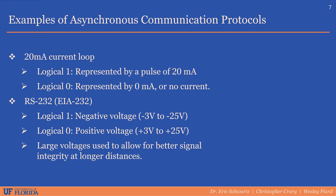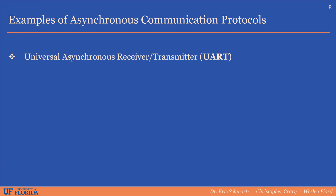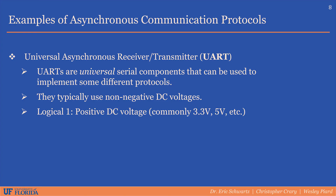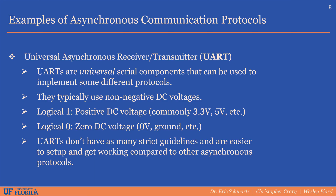RS-232 is an extremely well-known asynchronous protocol where large non-zero voltage levels are used to represent zeros and ones. The next example of asynchronous communication would be the Universal Asynchronous Receiver Transmitter, also known as a UART. UARTs are universal serial components that can be used to implement some variety of different protocols. They typically use non-negative DC voltages to represent digital values. A logical 1 is represented by a positive DC voltage — usually the logic level of the device you're interfacing with, so common ones are 3.3 volts, 5 volts, etc. — and a logical 0 is represented by 0 DC voltage. UARTs don't have as many strict guidelines and are easier to set up and get working compared to other asynchronous protocols.